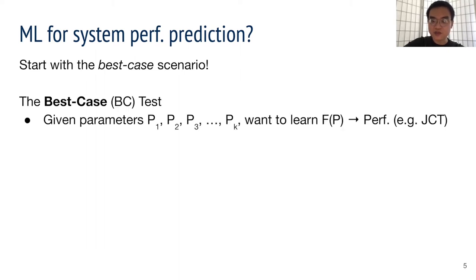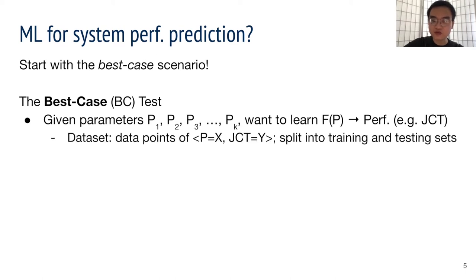We are given a number of parameters, say p1 to pk, and we want to find the mapping between these parameters and some performance metric. A dataset contains points with values for these parameters and the performance metric. These points will be split into two sets, one for training and the other for testing.